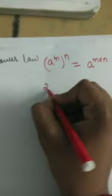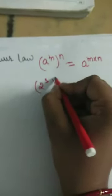The third law is the Power Law. It means if a number has a power and that result is raised to another power, the two powers are multiplied together, giving a power (m × n). For example, 2 power 3, all raised to power 4, equals 2 power (3 × 4), that is 2 power 12.